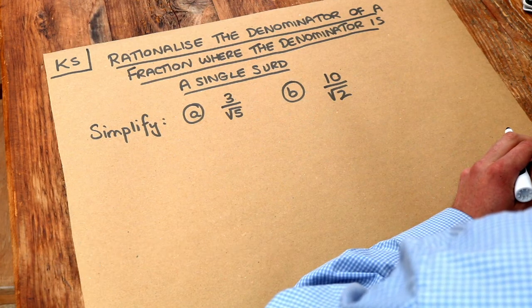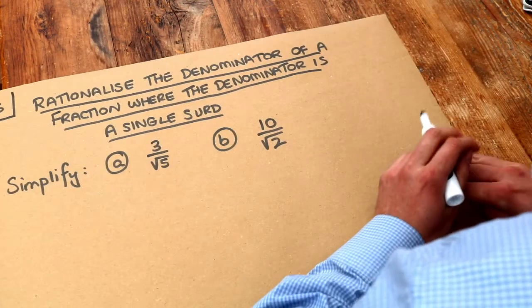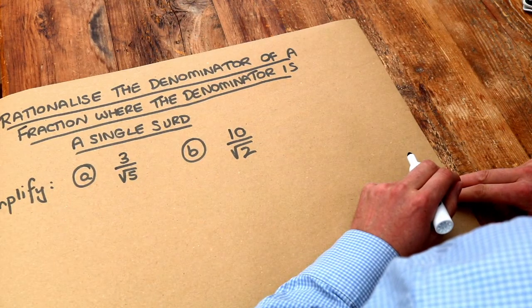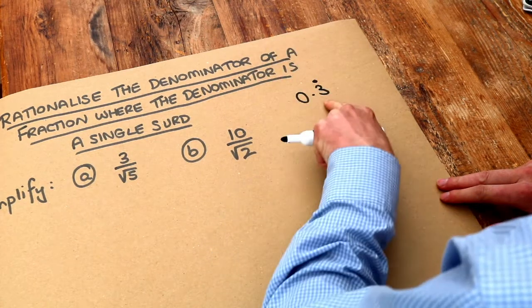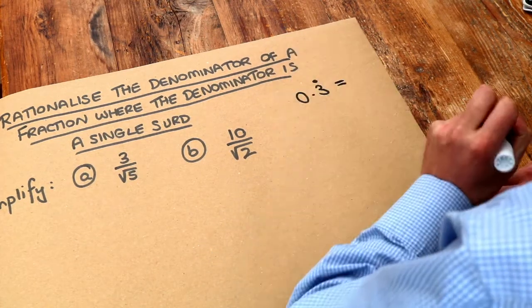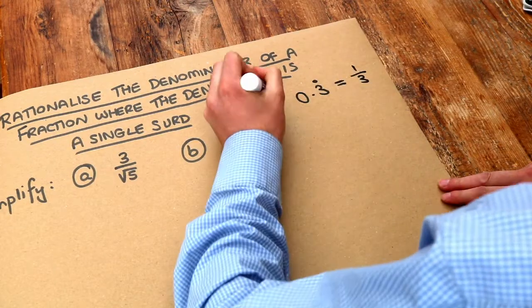Now what I mean by rationalizing the denominator? Well, a rational number is anything that could be expressed as a fraction. So for example, 0.3 recurring - that is rational because it could be expressed as a fraction involving whole numbers, that's just a third for example.